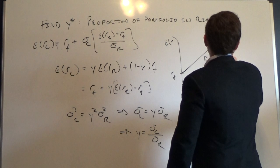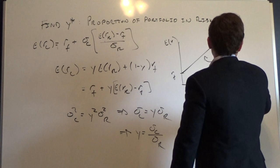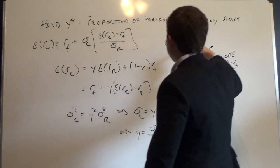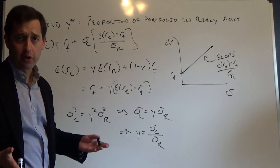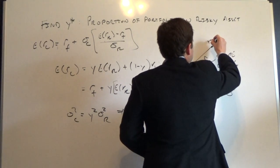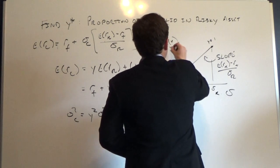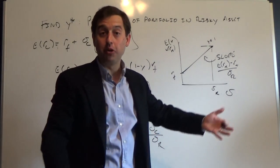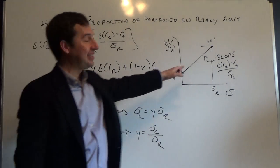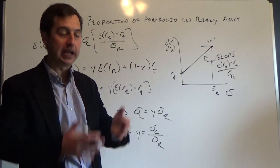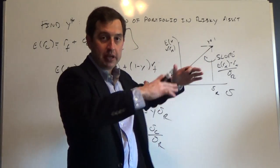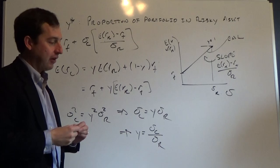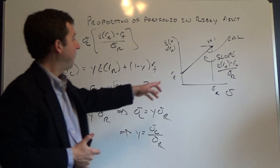This line is called the Capital Allocation Line (CAL) — it's our portfolio opportunity set. By varying Y, the proportion in our risky asset, we can invest anywhere on this line. We can also invest past that point where Y is 150%, but then we're borrowing. Generally you can't borrow at the risk-free rate — you borrow at a higher rate — so the slope flattens out past the risky portfolio point, creating a kink in the line.